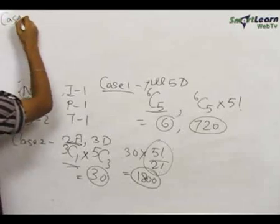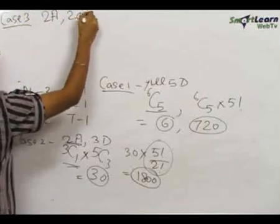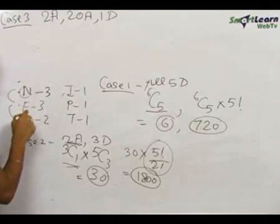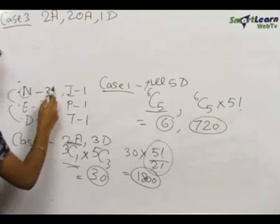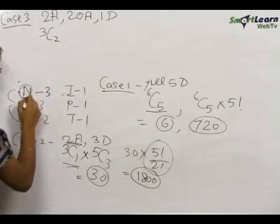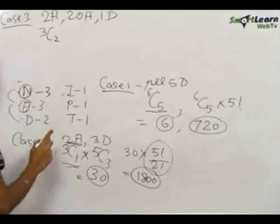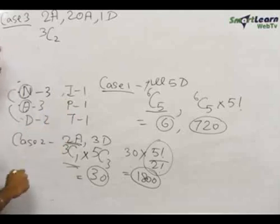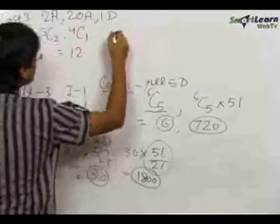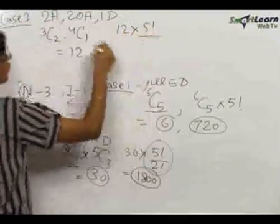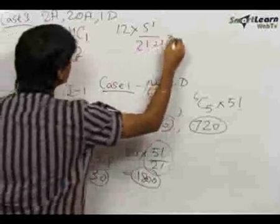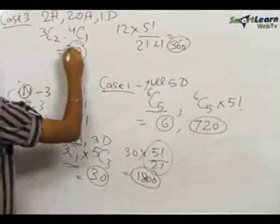Case 3: Two alike alphabets, two other alike alphabets, and one different. Two alike and two other alike both come from N, E, D. Selecting any two out of these three gives 3C2 = 3. For the one different alphabet, we choose from the remaining four (D, I, P, T), giving 4C1 = 4. So selections = 3 × 4 = 12. Words formed = 12 × 5!/(2! × 2!) = 12 × 30 = 360.